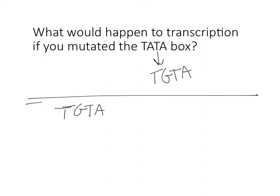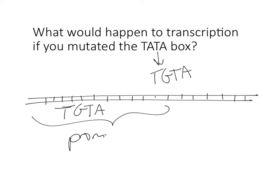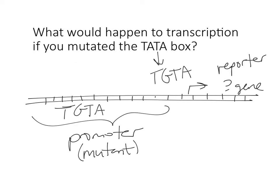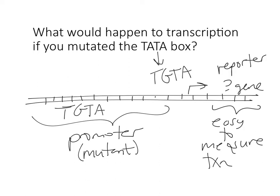What we're going to look at is situations where instead of TATA, we have TGTA in the promoter, and we're going to try to figure out whether or not the downstream gene is being transcribed. This is the purpose of a reporter gene — geneticists making recombinant DNA that combines a specific promoter, like a mutant promoter, with a specific gene that's easy to measure transcription of. A reporter gene is just a protein that does something easy to measure, so we know whether or not transcription is occurring.